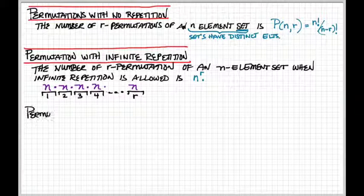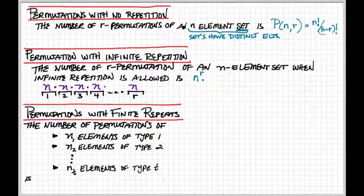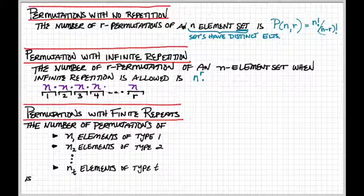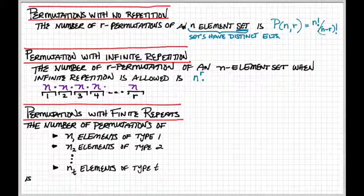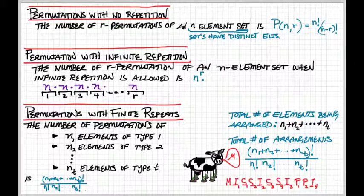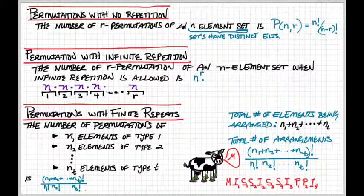On the other hand, if we're looking at permutations with finite repetitions, someone says I want to know the number of permutations where there are N1 elements of type 1, N2 elements of type 2, and Nt elements of type t. This is the Mississippi example I gave you, and it can be considered, you know, N1 plus N2 plus Nt as the total number of elements that are being rearranged.